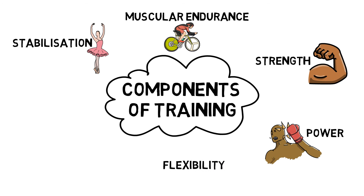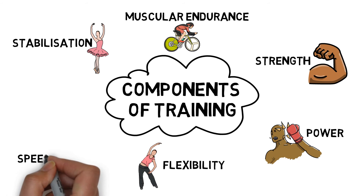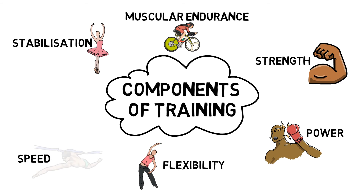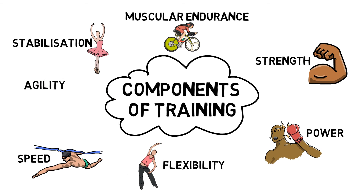Flexibility is the normal extensibility of all soft tissues that allow for full range of motion of a joint. Speed is the ability to move the body in one intended direction as fast as possible. And agility is the ability to accelerate, decelerate, stabilize, and change direction quickly whilst maintaining correct posture.